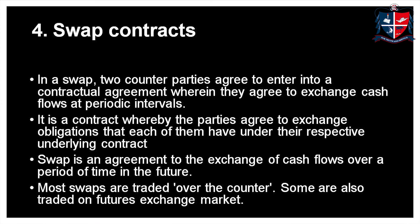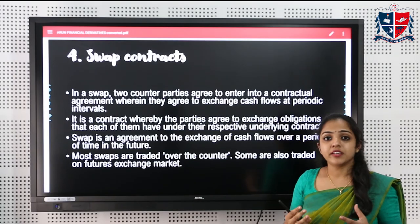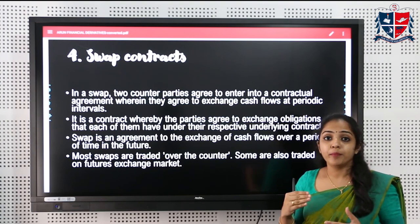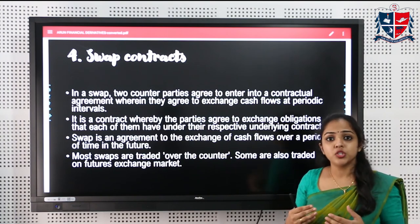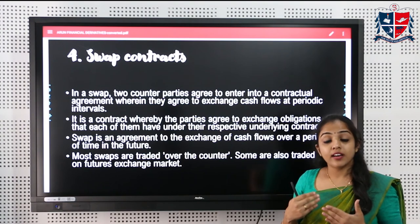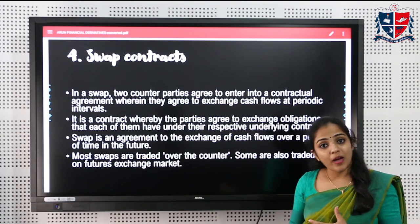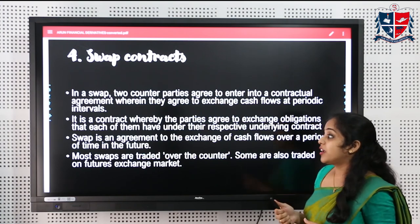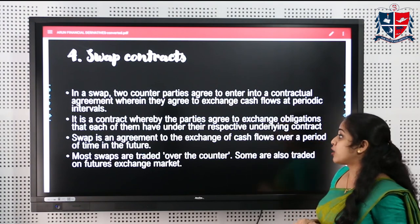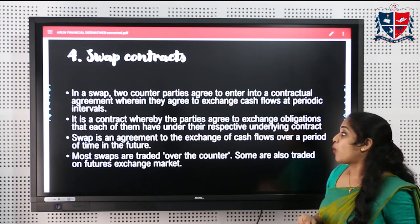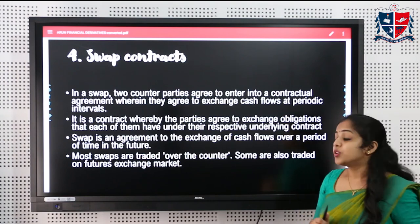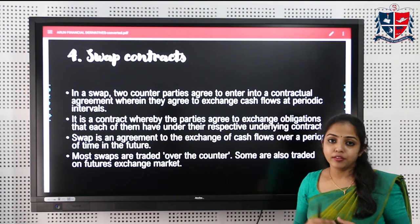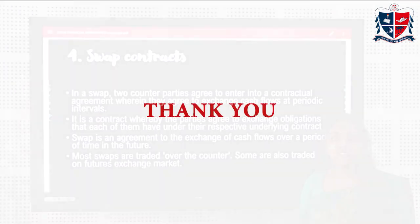The last type of derivative is the swap contract. A swap is a bilateral contractual agreement between parties to exchange cash flows over a period of time. Currency swaps are a common example, where parties exchange currencies or the difference in currencies. It is an agreement to exchange obligations under respective underlying contracts over a period of time in the future.